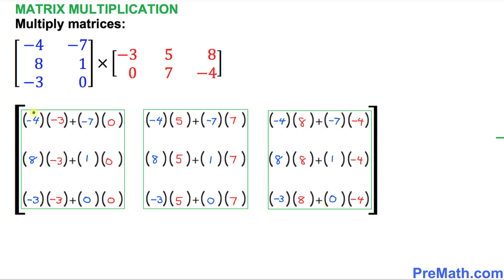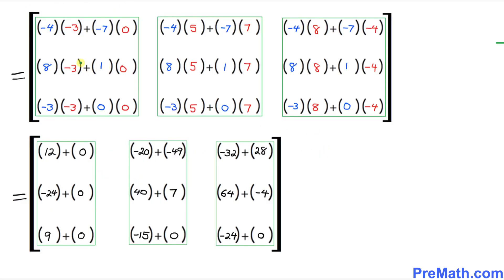In our next step we are going to multiply these parentheses. Negative four times negative three is going to become positive 12. Negative seven times zero is zero. We multiply across the board all these numbers. Negative four times negative three turns out to be 12, and negative seven times zero is zero, placed each in a single parentheses — and I did the same thing across the board.